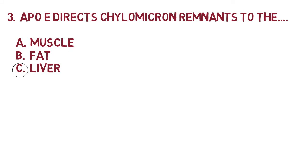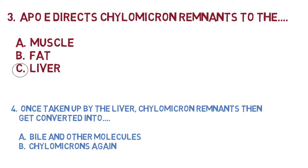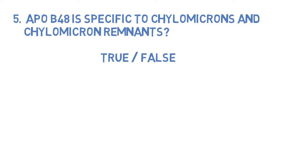Question number four: Once taken up by the liver, chylomicron remnants get converted into A) bile and other molecules, or B) chylomicrons again? The answer is A. Question number five: ApoB48 is specific to chylomicrons and chylomicron remnants — true or false?